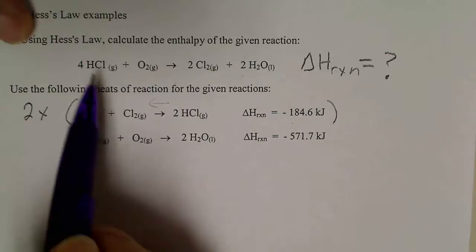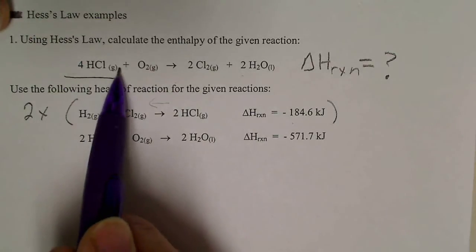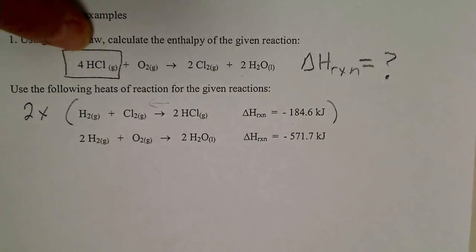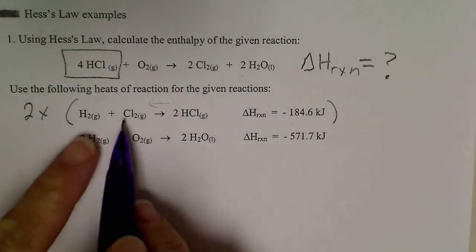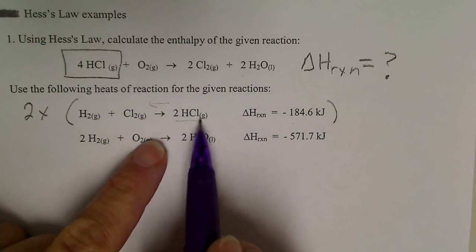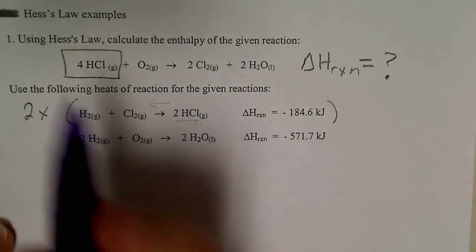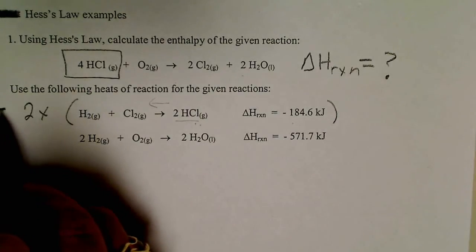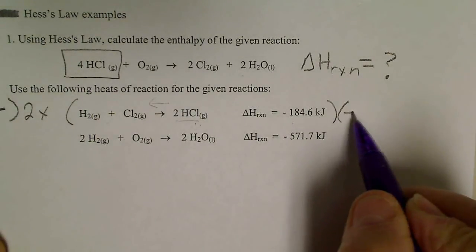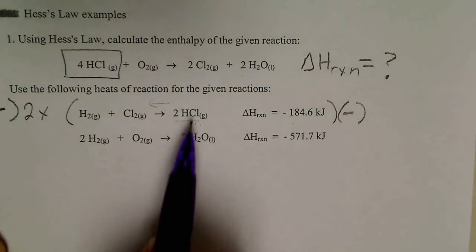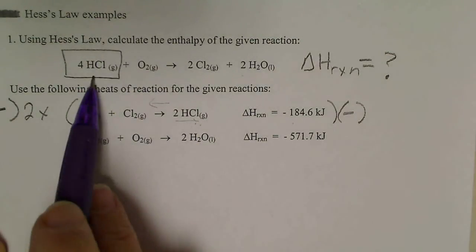So what I'm going to do is look for a formula below where I've got HCl gas, and I want to have four moles of HCl gas on the reactant side. If I look at this equation, I've got two moles of HCl on the product side. So if I multiply this equation by two and then reverse the sign of delta H, because I want the HCl to be a reactant.